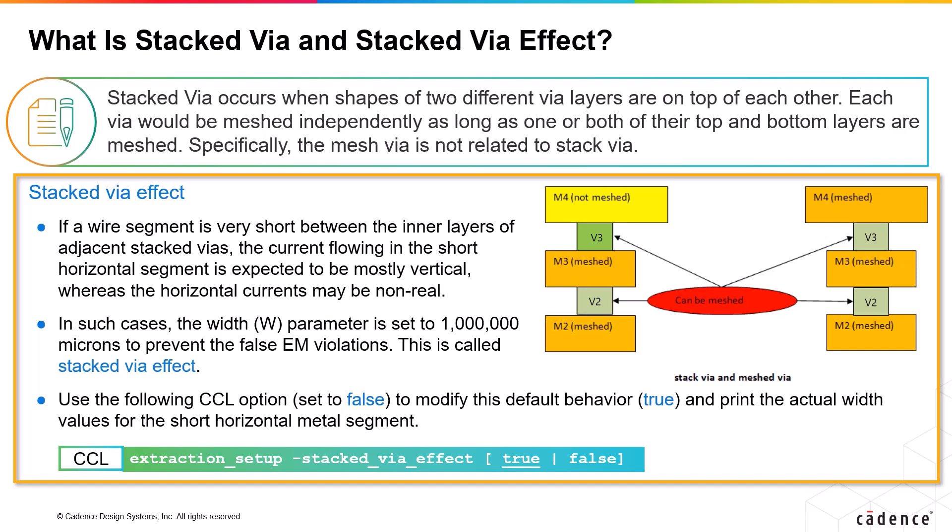Thus, by default, the width parameter is set to 1 million microns to prevent false EM violations. This is called stacked via effect. However, the stacked_via_effect option allows you to modify this default behavior and print the actual width values.